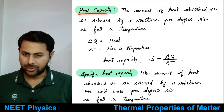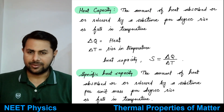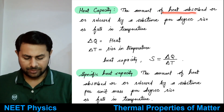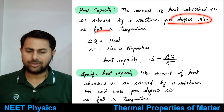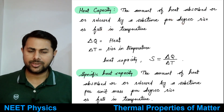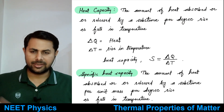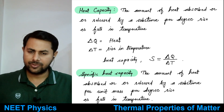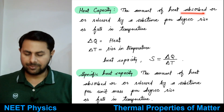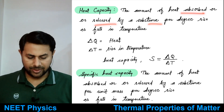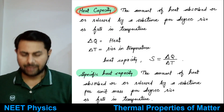Next we will talk about heat capacity. What is heat capacity? It is the amount of heat absorbed or released by a substance per degree rise or fall in temperature. If it absorbs some heat, its temperature will rise, and if heat is released, its temperature will fall. This is called heat capacity.